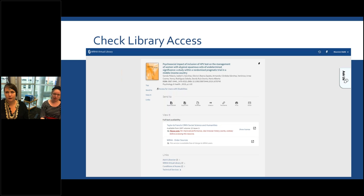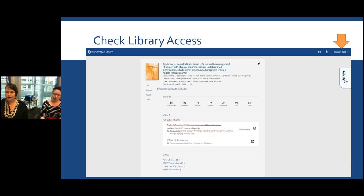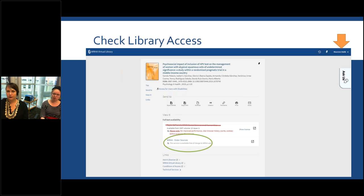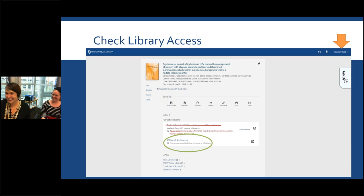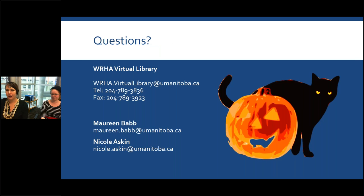Make sure you have not blocked pop-ups, otherwise it may not work. WRHA Virtual Library users can only access links that have the WRHA prefix. You need to be signed in — you can see that in the top right corner — and then you'll see the WRHA order sources option. This button automatically fills in a form to request the item; just agree to the terms and click submit, and we'll send the article to your inbox, usually within a day. Books will generally be sent as a paper copy.